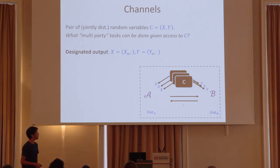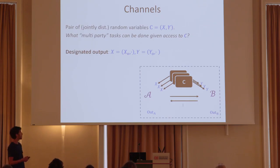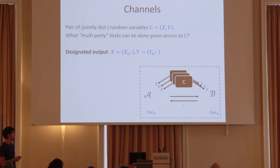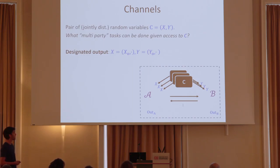In this work, we are going to focus on channels with designated outputs. We will assume that X contains some part that is the output of Alice, and Y contains a part which is the output of Bob. We think about it as one or two bits usually. In order to execute this protocol, Alice only needs to know her output in the channel. But if Alice is curious, she may want to learn as much information as she can about the output of Bob, and she can use all of X in order to do so.